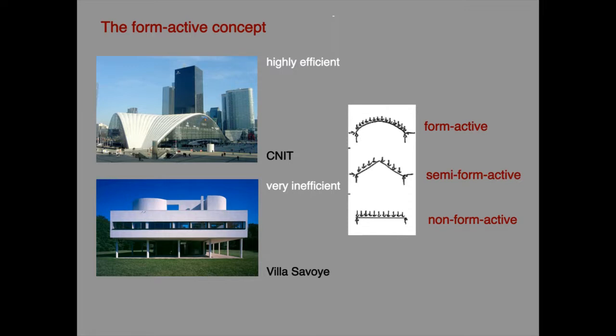This allows all architectural structures to be subdivided into three basic categories: form active curvilinear forms of arched profile; non-form active straight horizontal spans; and semi-form active, which includes all other shapes including non-arched curvilinear forms. These are the three primary archetypes of structure which determine broadly how efficient the structure will be.